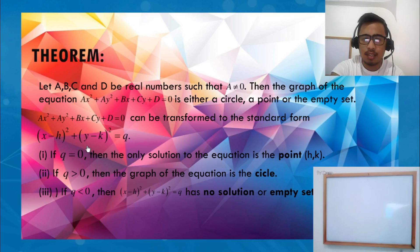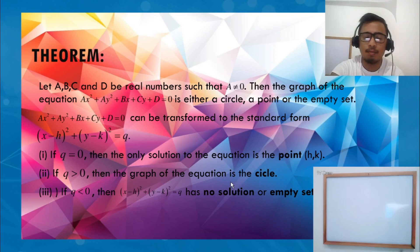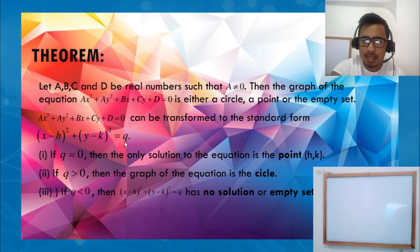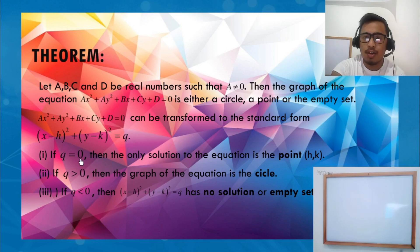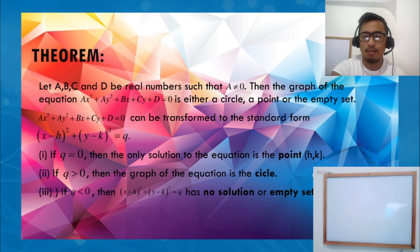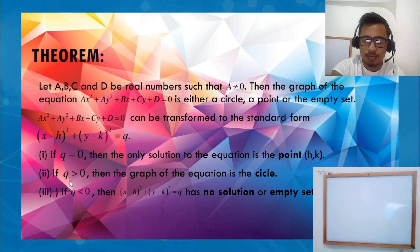In the standard form, we replace R² by Q so that we can easily determine whether it is a circle, a point, or empty set. First, if the value of Q is 0, then the only solution is the point (H, K). If Q is greater than 0, then the graph of the equation is a circle — circle R.